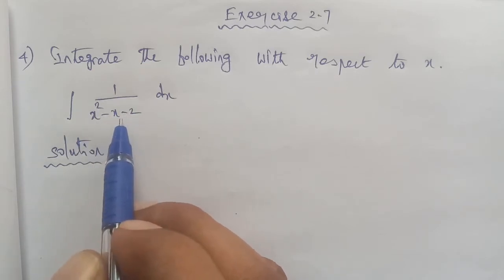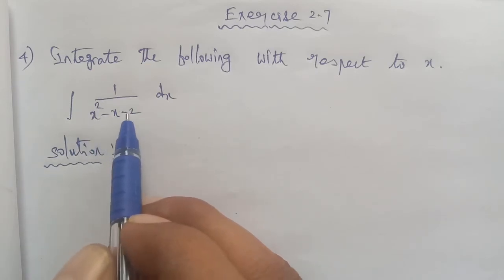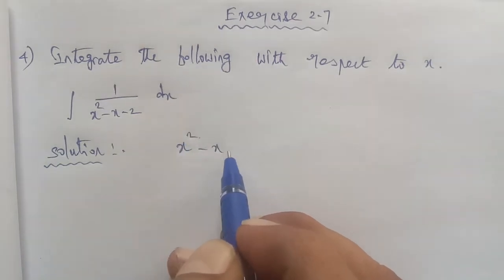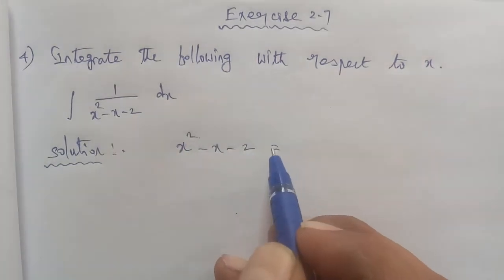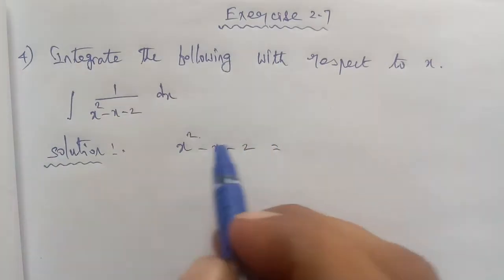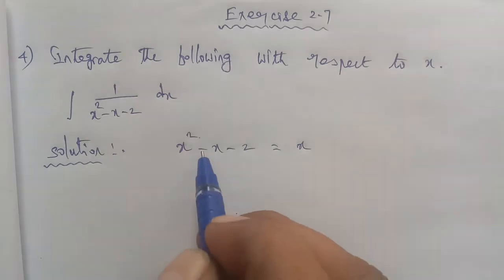So first, the given equation is a quadratic equation. We'll use the complete square method. For the first two terms, x square and x, the middle term is minus, so we take x square minus.